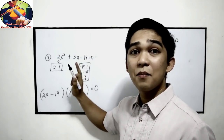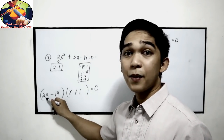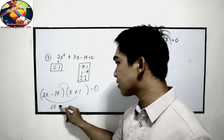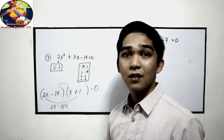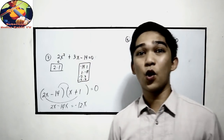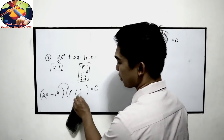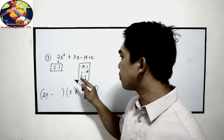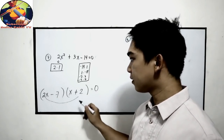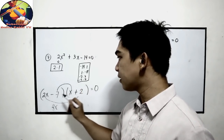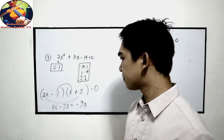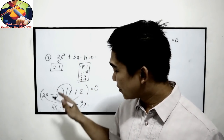Let us check the middle term. To check, multiply outer times outer and inner times inner. Trying negative 14 and positive 1: outer to outer is 2x times 1 = 2x, inner to inner is negative 14 times x = negative 14x — that gives negative 12x, which is not equal to the middle term, so that factor is incorrect. Next, trying negative 7 and positive 2: outer is 4x, inner is negative 7x — that gives negative 3x. Still not equal, so these factors are also wrong.